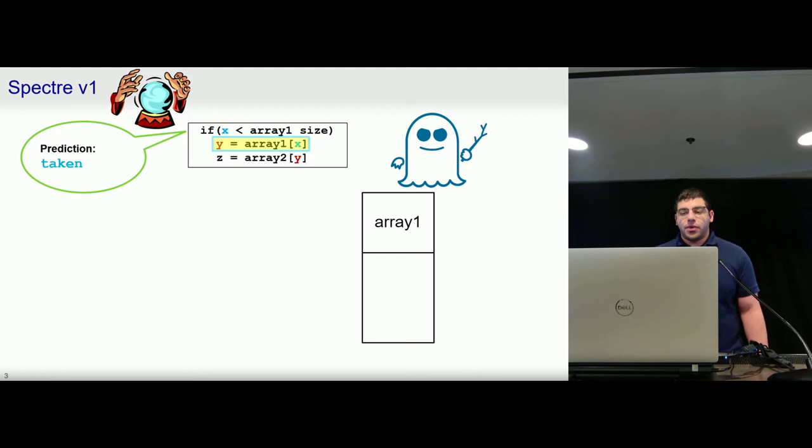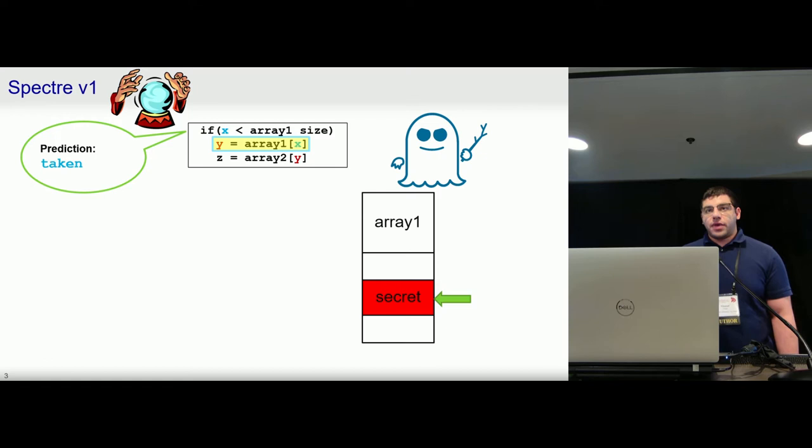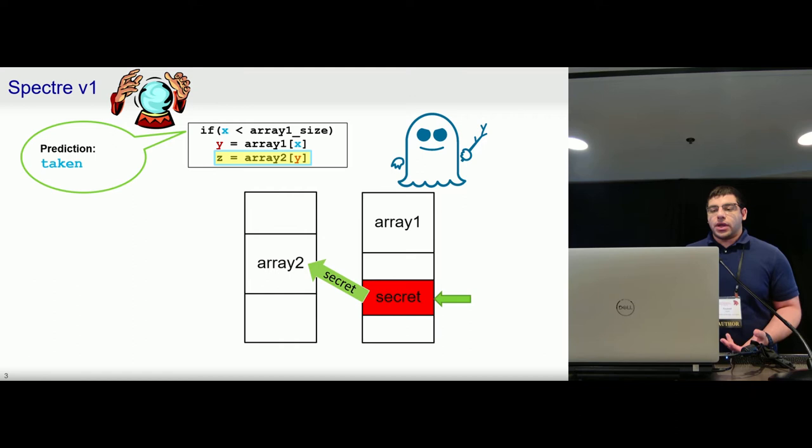From here, we can send in an out-of-bounds value of X, causing us to enter a state of speculative execution, allowing us to touch this out-of-bounds secret data. Here the secret will be used to index into another array. And we might be thinking that this is clearly a misprediction, so everything will be undone.